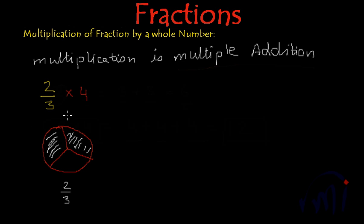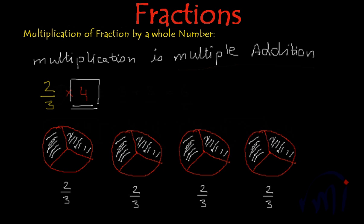Now what we have to do? We have to multiply this 2 by 3 by 4. That means we have to add this 2 by 3 four times. So I am going to make 4 two by threes like this. So now we have 4 two by threes. I have replicated the same picture 4 times. This means this multiplication.